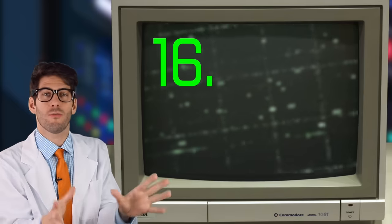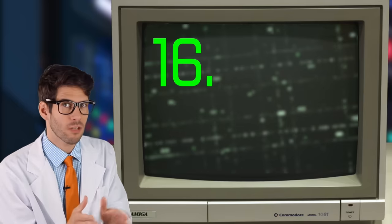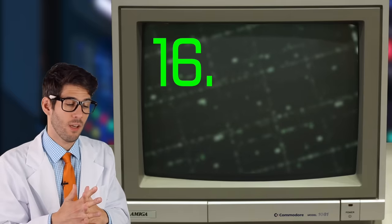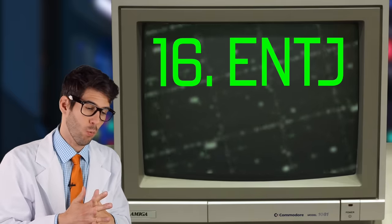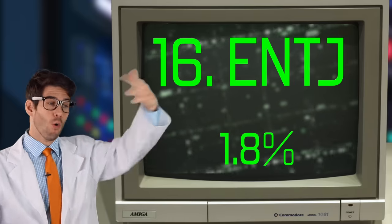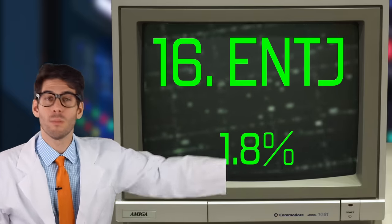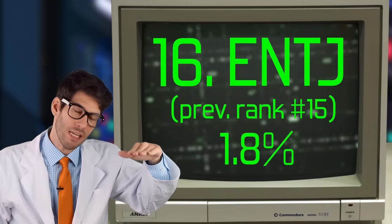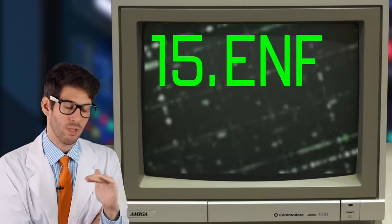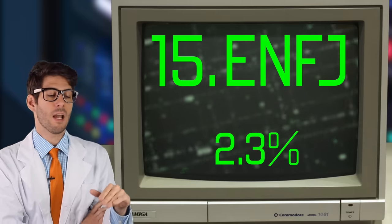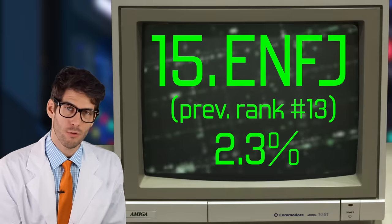So the rarest personality type, according to this official survey by the Myers-Briggs company, as of 2018, is the ENTJ with 1.8% of the population. Interestingly, the old data also had them as 1.8% of the population, but they were at the number 15 slot. Then of course, that leaves us with ENFJ being the second rarest type, the number 15 slot. Going down the list from number 13 last time. So there you have it, folks.